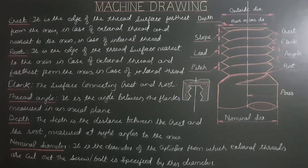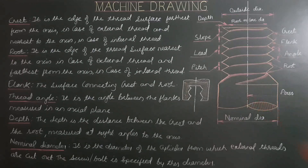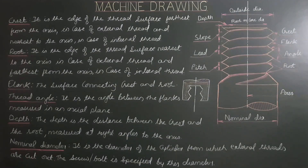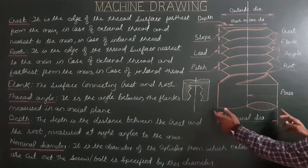Nominal diameter is the diameter of the cylinder from which external threads are cut. The screw or bolt is specified by this diameter — it is the diameter of the cylindrical piece from which external threads are cut out.